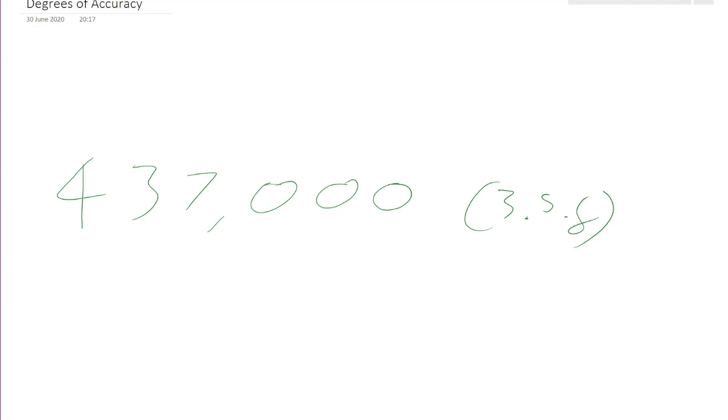What is a degree of accuracy? Well, I've got a number written down here: 437,000. We've seen significant figures before — you would be reasonable in assuming this is accurate to three significant figures, although it doesn't have to be. It could be accurate to four, five, six, seven, eight, or nine significant figures. Basically, it can't be accurate to less than three significant figures, because to two significant figures this would be 440,000.